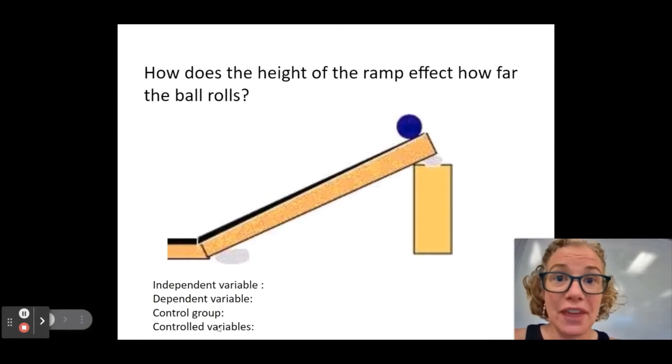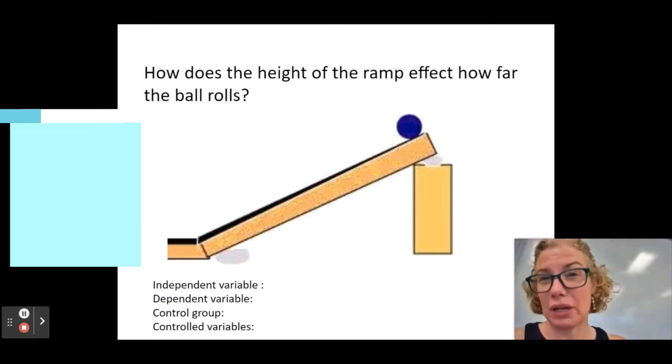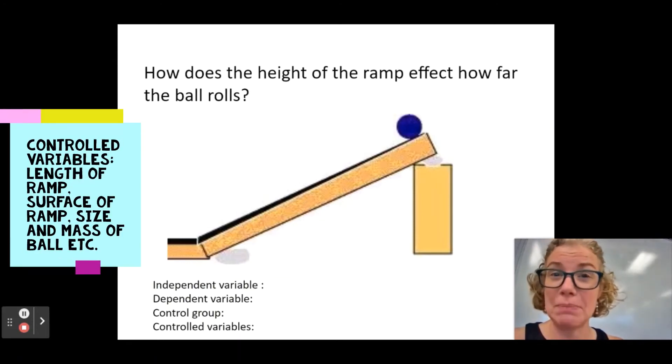Controlled variables, the things we keep the same, hmm, same ramp, same surface of ramp, same type of ball, same mass of ball, same, well, really, it should be the same ball, period. Right? The amount of force we're using, like, are we pushing it? Probably not. We should probably set it because it's more easy to control and keep the same.